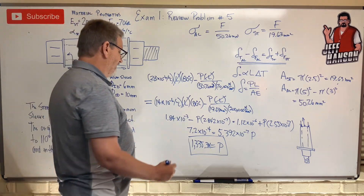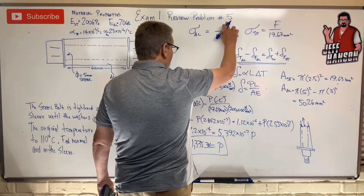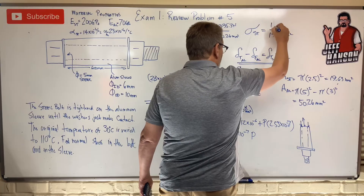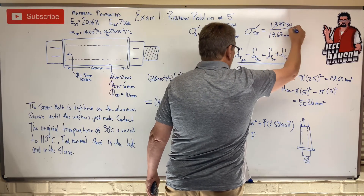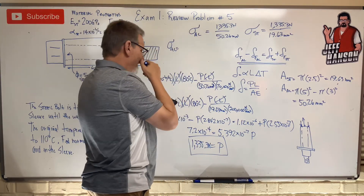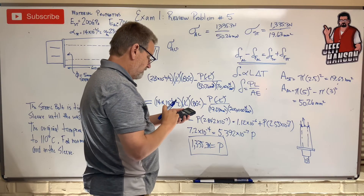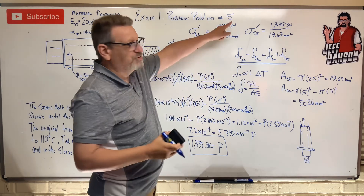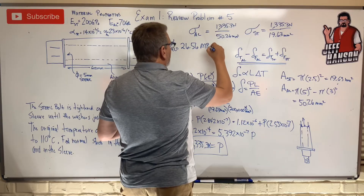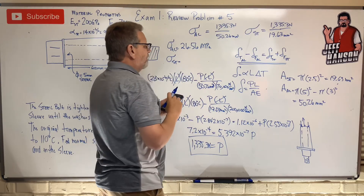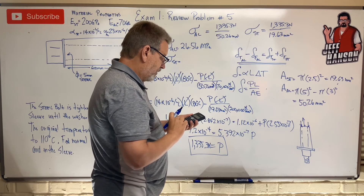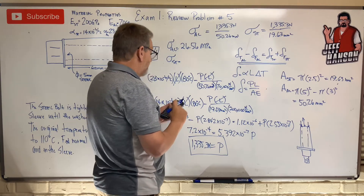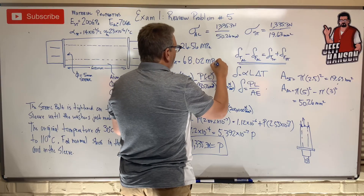Now we use P = 1335.3 N to find stresses. Sigma_aluminum = 1335.3 / 50.26 = 26.56 MPa. Sigma_steel = 1335.3 / 19.63 = 68.02 MPa. There you go — we win.